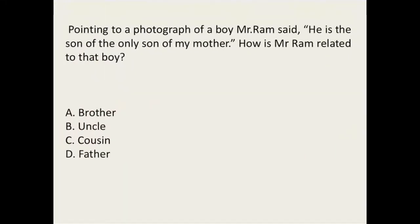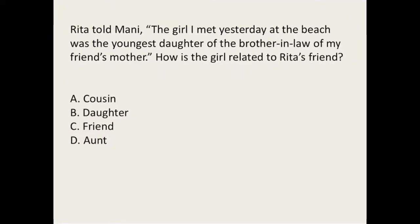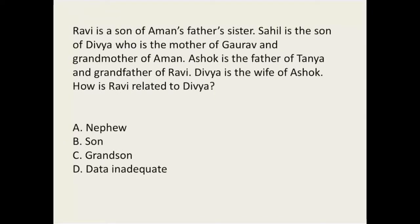Pointing to a photograph of a boy, Mr. Ram says 'he is the son of the only son of my mother' — this means the boy is his son, so D is the answer. Rida told Mani: 'The girl I met yesterday at the beach was the youngest daughter of the brother-in-law of my friend.' Make a relationship chart and solve it. Friends in blood relationships don't extend to cousin or aunt; going through the chart, the right answer is 'friend.'